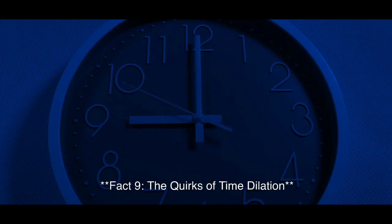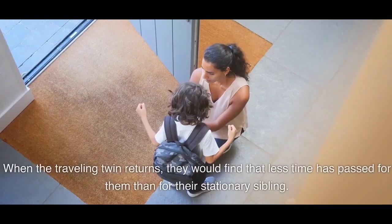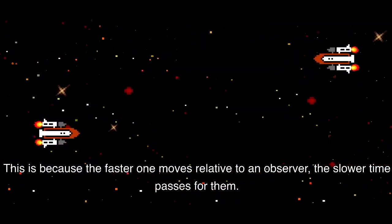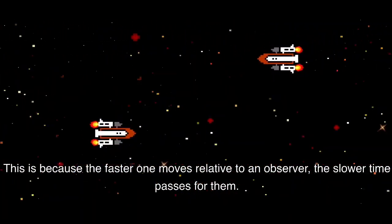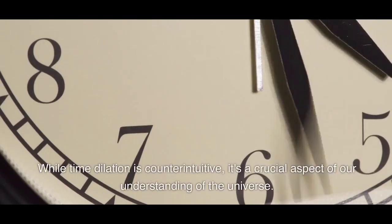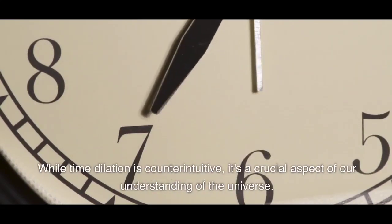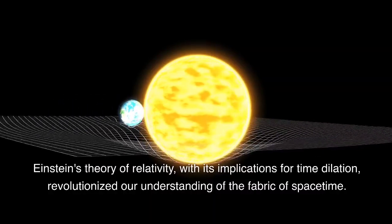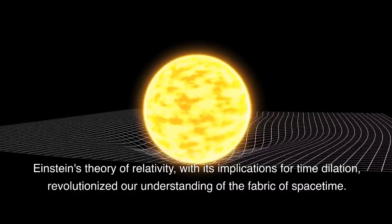Fact 9, The Quirks of Time Dilation. When the traveling twin returns, they would find that less time has passed for them than for their stationary sibling. This is because the faster one moves relative to an observer, the slower time passes for them. Time dilation also occurs in the vicinity of massive objects like black holes. The effect is especially pronounced near the event horizon, where time can virtually come to a standstill. While time dilation is counterintuitive, it's a crucial aspect of our understanding of the universe. Einstein's theory of relativity, with its implications for time dilation, revolutionized our understanding of the fabric of space-time.